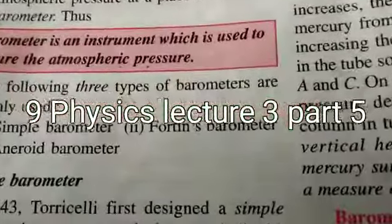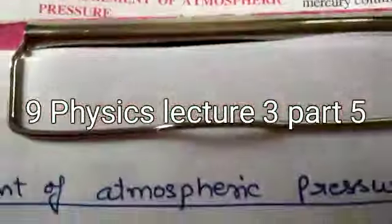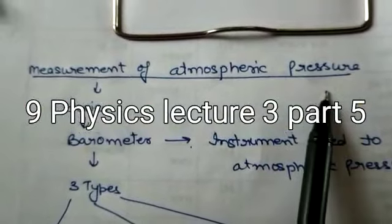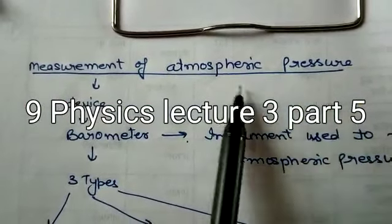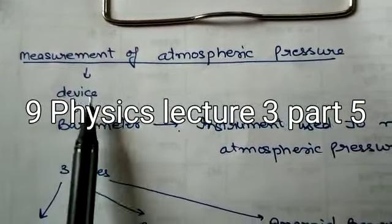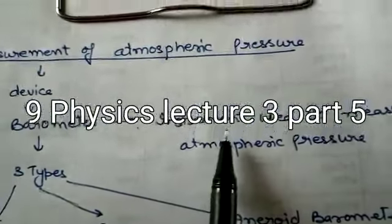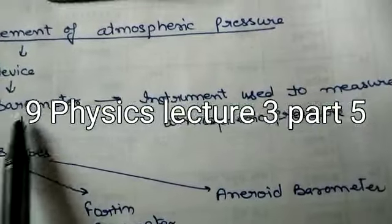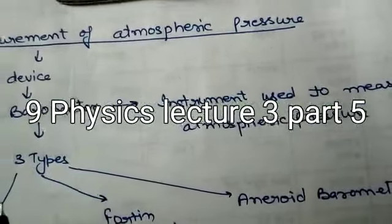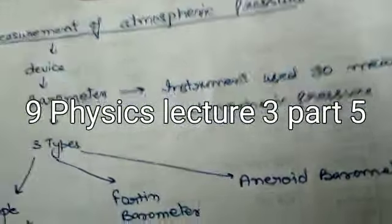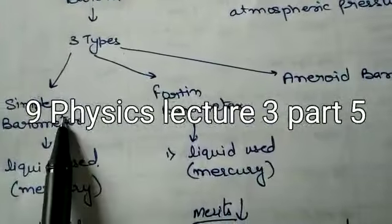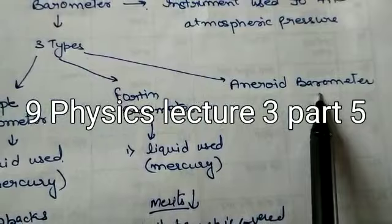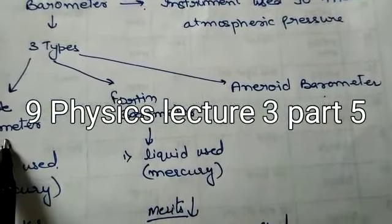So here we are having three types of barometers. We have atmospheric pressure, we want to measure, we need one device. The device is known as barometer or you can say in definition form, instrument used to measure atmospheric pressure is known as barometer. There are three types of barometers we are having. Number one is simple barometer. Number two, Fortin barometer. Number three, aneroid barometer. So firstly, we will discuss about the simple barometer.